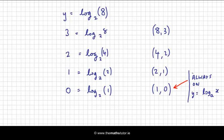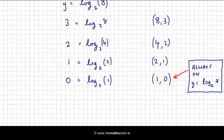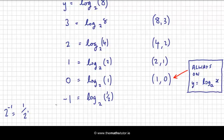Lovely. So let's plot a few more — other powers of 2. We've done 3, 2, 1, 0. What about if y is minus 1? So 2 to the power of minus 1 is the same as 1 over 2 to the power of 1, which is just 1 over 2. So the x value here is 1 over 2. Log of 1 over 2 to base 2 is minus 1 — that's the power. So we have the ordered pair one-half, minus 1.